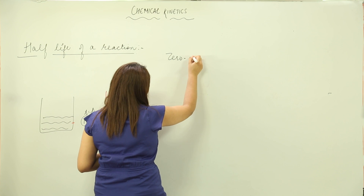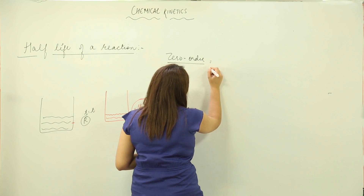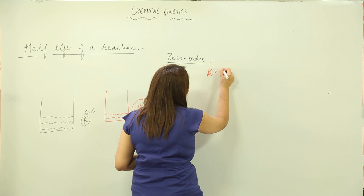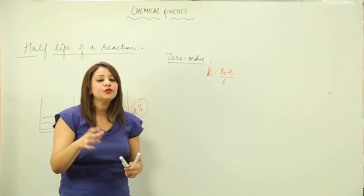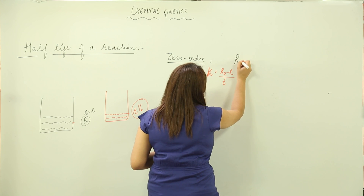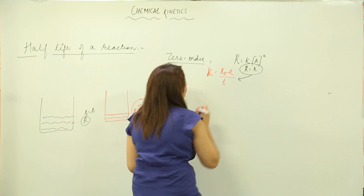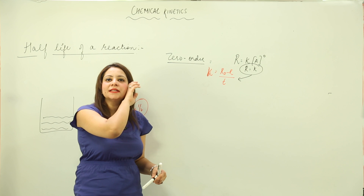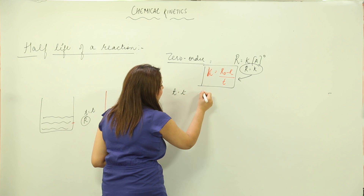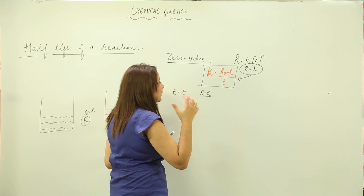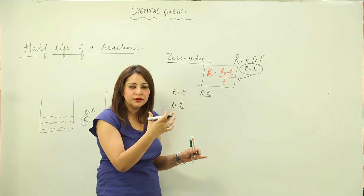For a zero-order reaction, we know that the rate constant K is equal to (R₀ − R) divided by T. We also know the differential law expression: the rate of reaction depends upon K times the reactant raised to power 0, because the rate is constant. This expression applies when time is T and concentration of reactant is R.